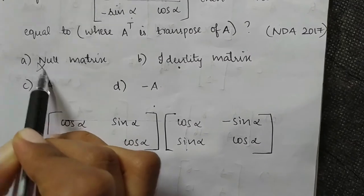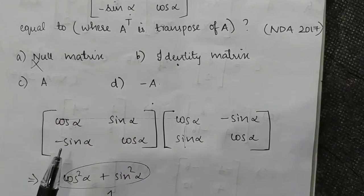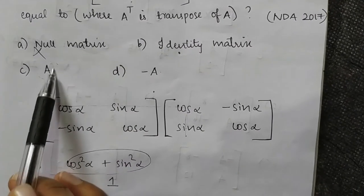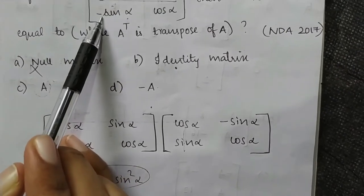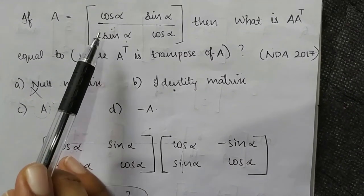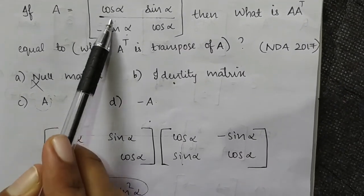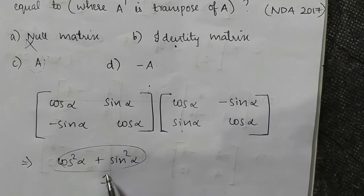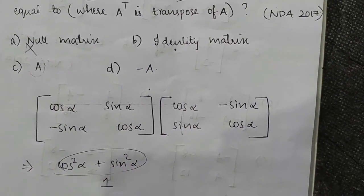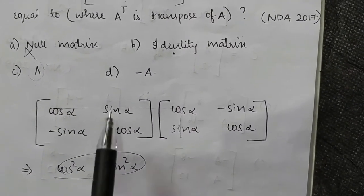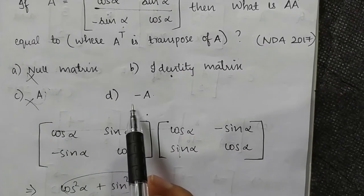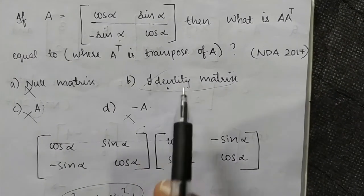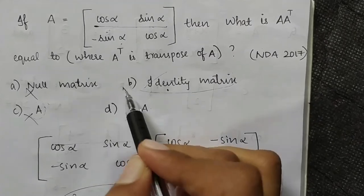So this gives us the identity matrix, since the off-diagonal terms cancel to zero. We have a trigonometric identity matrix result.